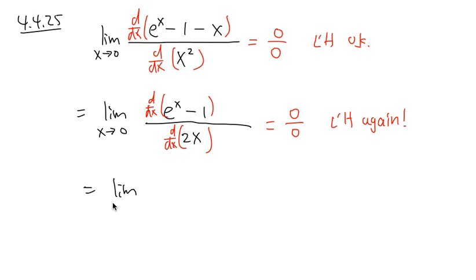Still, we have the limit when x is approaching 0. On the top, derivative of e to the x is just e to the x. Derivative of negative 1 is 0. And on the bottom, take the derivative of 2x, that will give you 2.